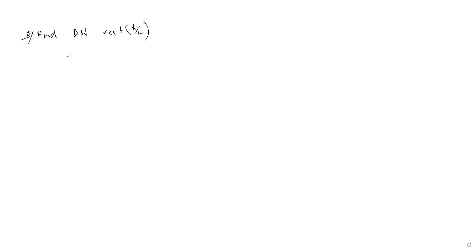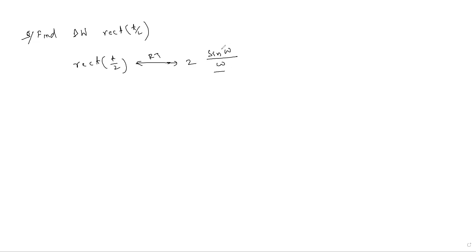To analyze this signal you have to transform it into the Fourier transform or frequency domain. When you find the Fourier transform, its Fourier transform is nothing but 2·sin(ω)/ω. This is nothing but a sinc function, because sinc is defined as sin(πθ)/(πθ).